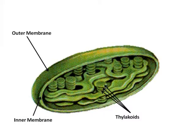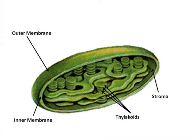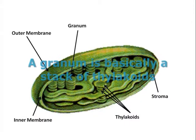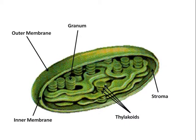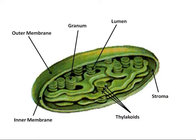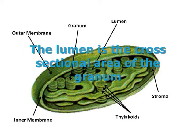Thylakoids are membranes in which the reactions involving light and sun energy take place. These thylakoids are embedded into the stroma. A stack of thylakoids is therefore called a granum. On the surface of these thylakoids are chlorophyll molecules which use sunlight to create glucose. These thylakoids are bound compartments called lumen. There you have it — the six basic parts of a chloroplast.